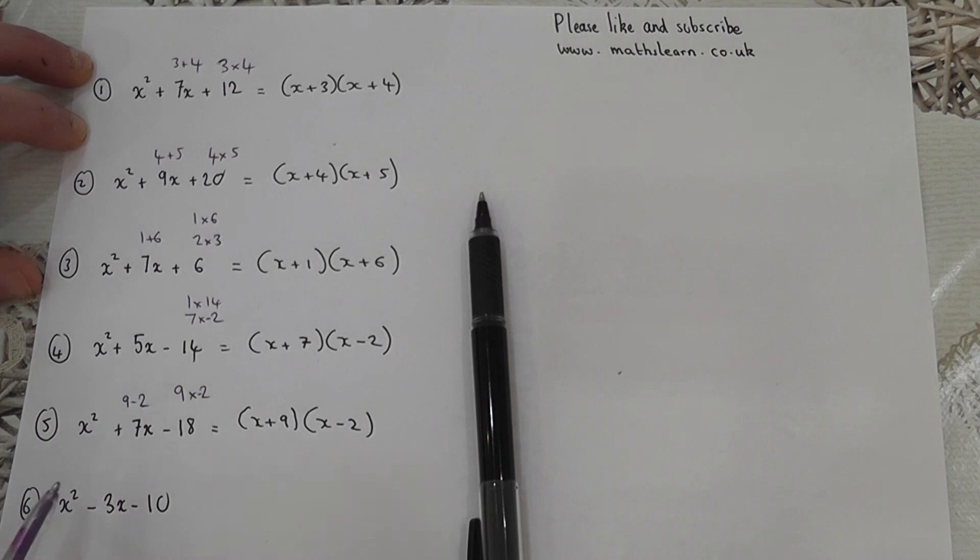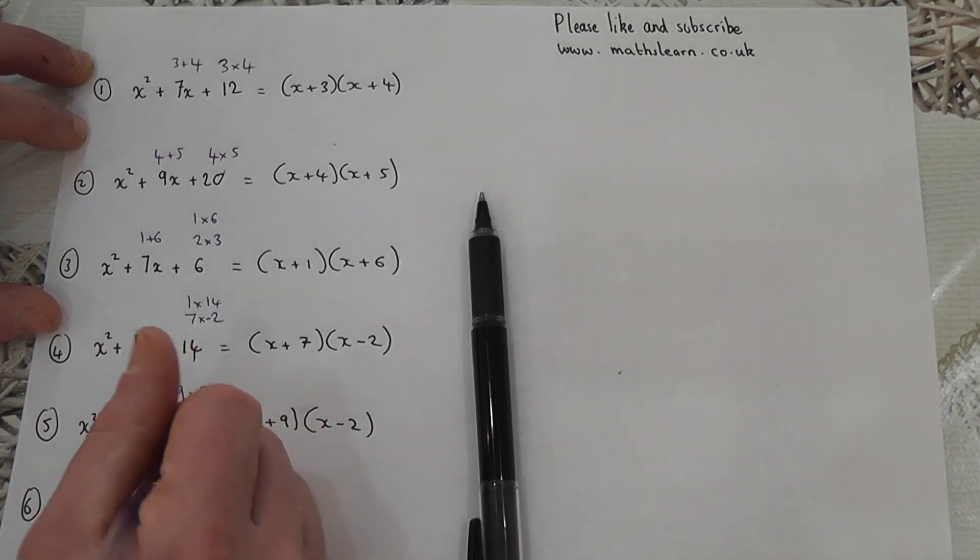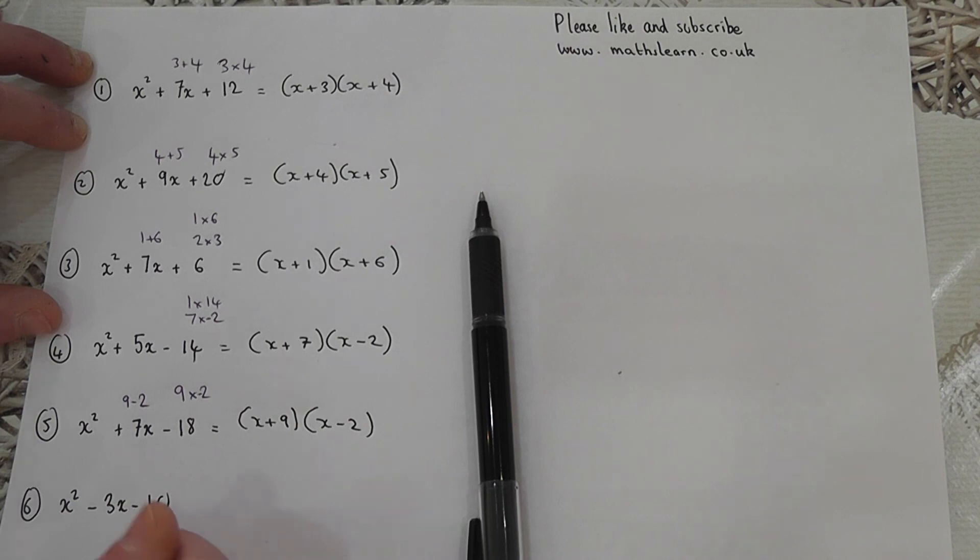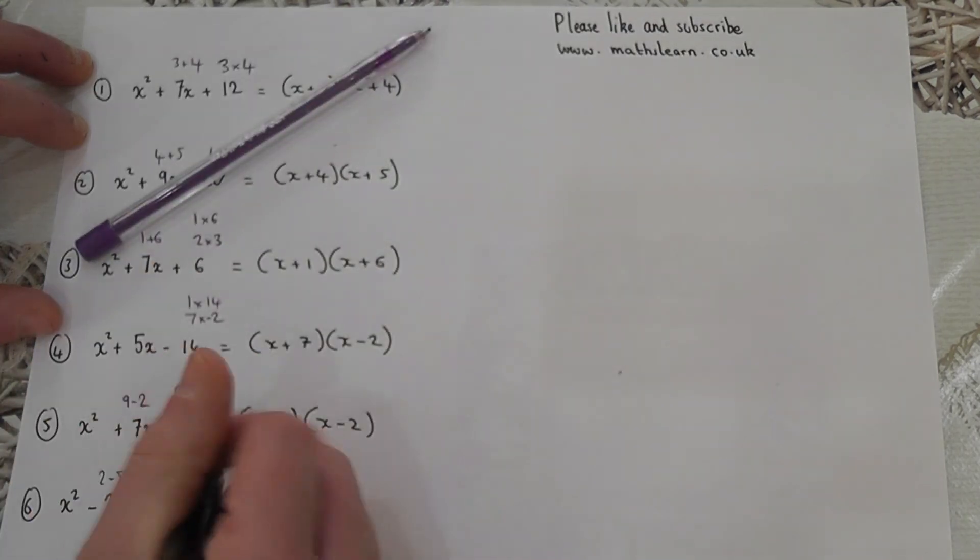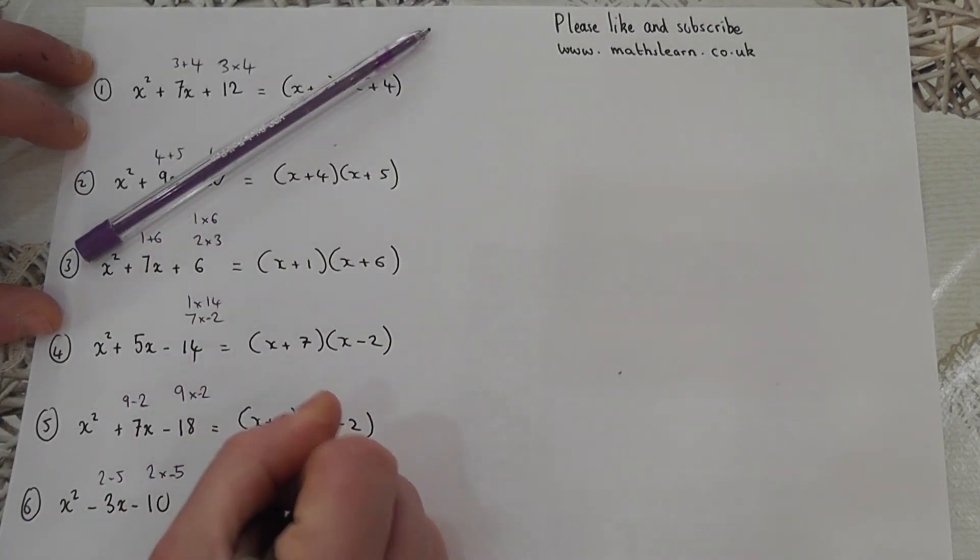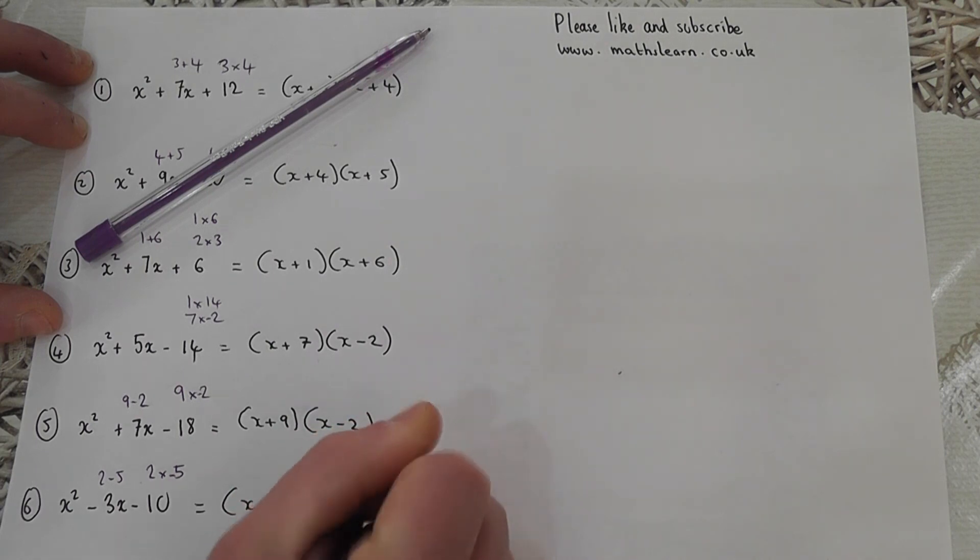Be very careful about the last one before the extension questions. This is negative 10, which is 1 times 10, or 5 times 2, or 2 times 5. However, it's negative 10. If I put 2 times 5, then to get a negative 3, I've got to make the 5 negative, not the 2, because 2 take away 5 is negative 3. If I put 5 and minus 2, that would make a positive 3. So it's 2 and minus 5. The answer is x plus 2 and x minus 5.